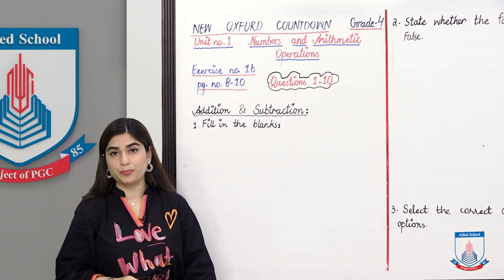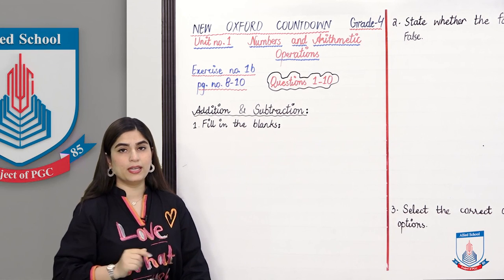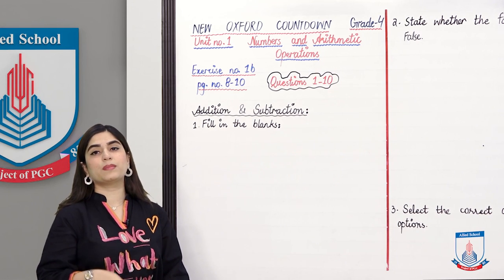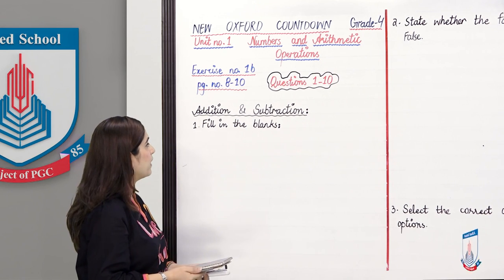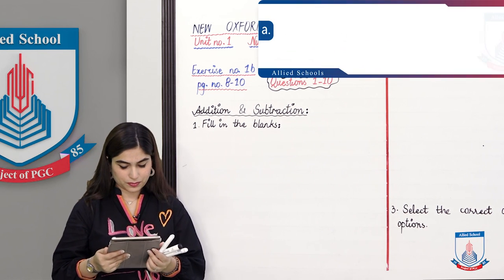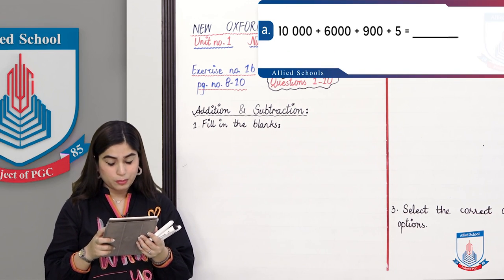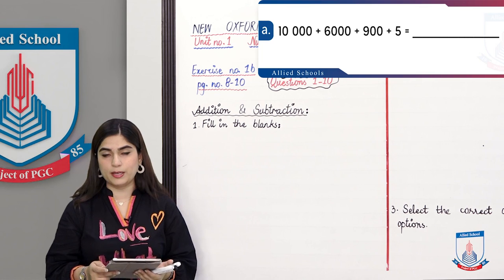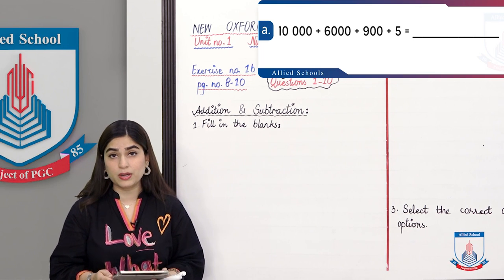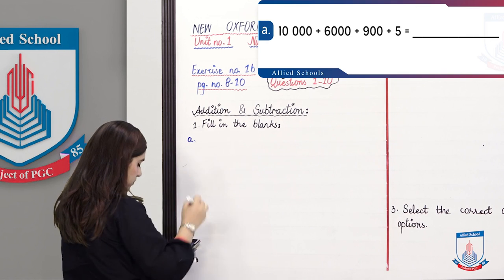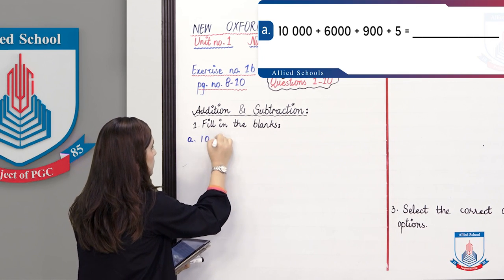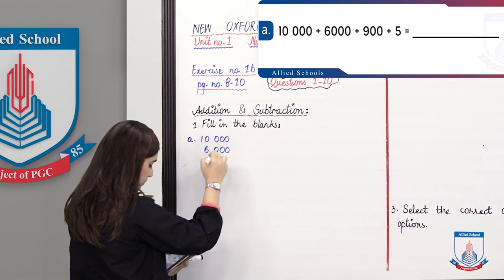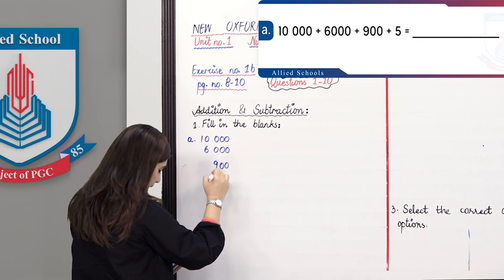How do we learn to do addition? We have to do addition vertically. We have to write in the blanks. The question is: 10,000 plus 6,000 plus 900 plus 5 equals what? We have to add all the numbers. I will give the values vertically: 10,000, then 6,000, then 900, and 5.